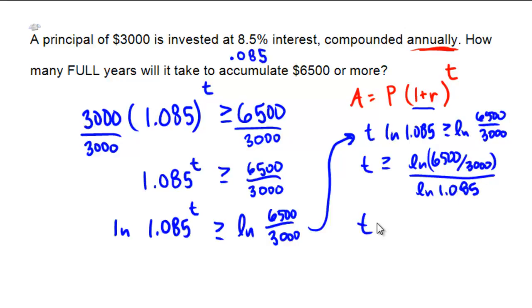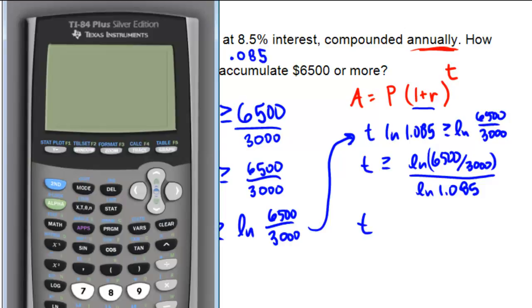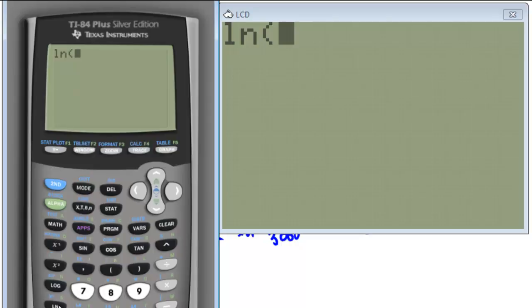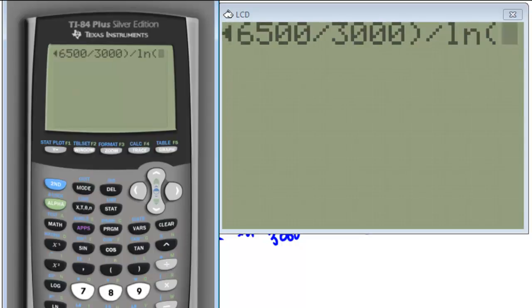Of course, I can't do this without a calculator. I can't do that in my head. So I'm going to break out my calculator now and perform that arithmetic. And here is my calculator. And the problem that I needed to discover was I needed to calculate ln of 6,500 divided by 3,000 and then divide that by ln of 1.085.